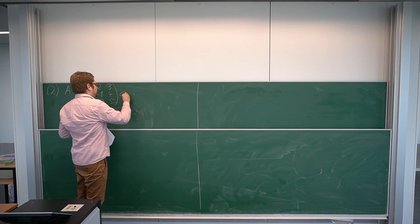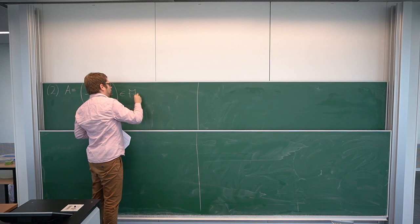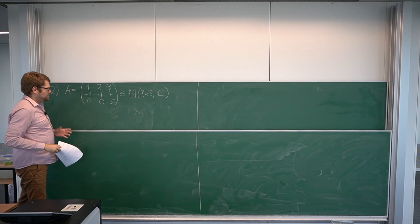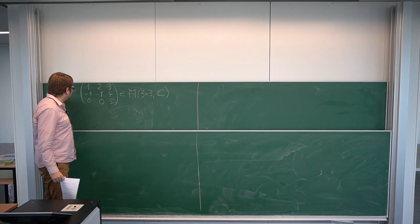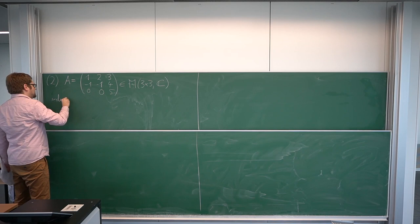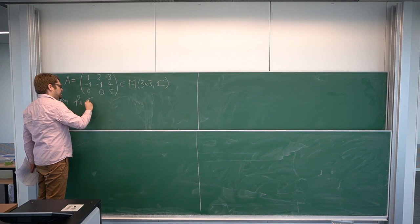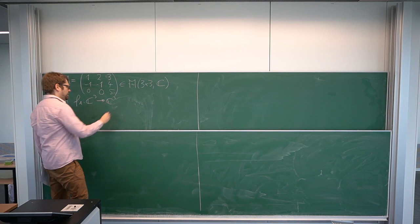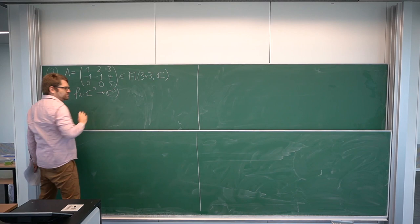Let's consider the same matrix as before, but this time we'll beef things up. This is a real 3x3 matrix, but any real 3x3 matrix can be seen as a complex 3x3 matrix. Real numbers are complex numbers, so we can view this as a complex matrix and take a look at the corresponding endomorphism of C to the power of 3. We have formulated everything for abstract fields, so we can take C with the same right as before.